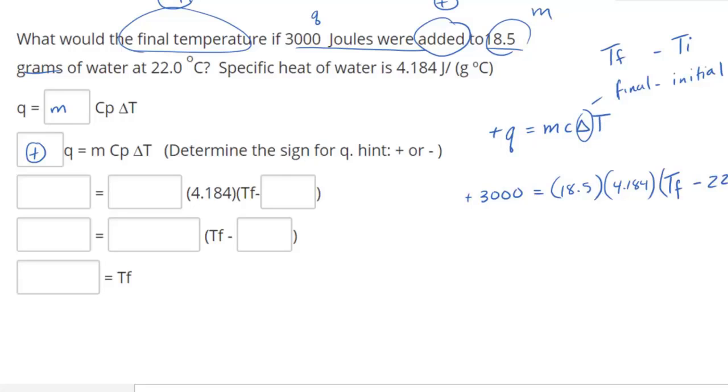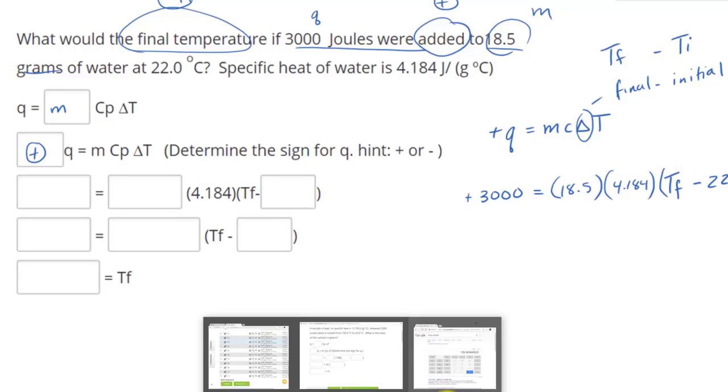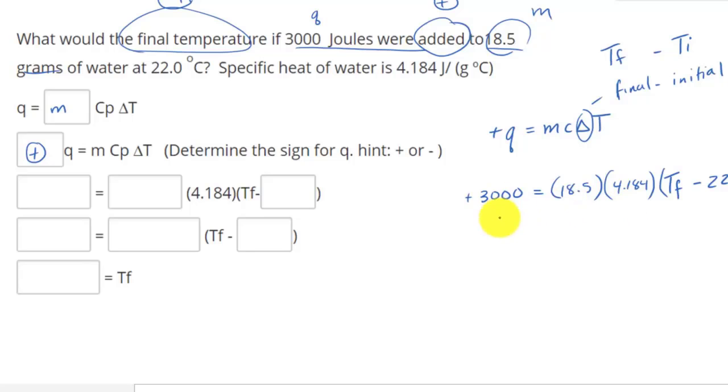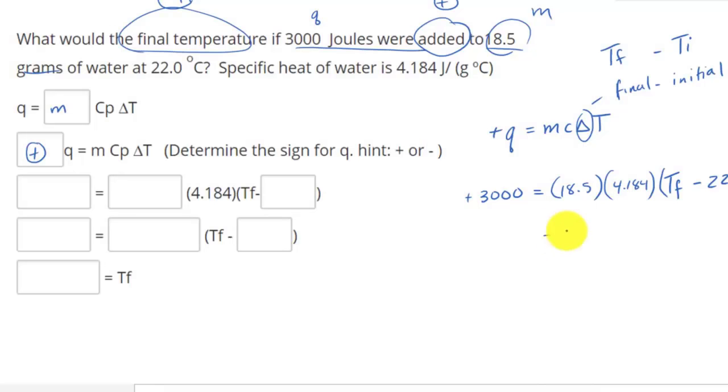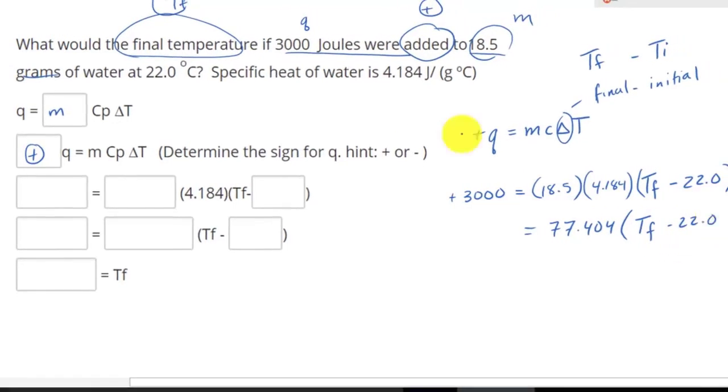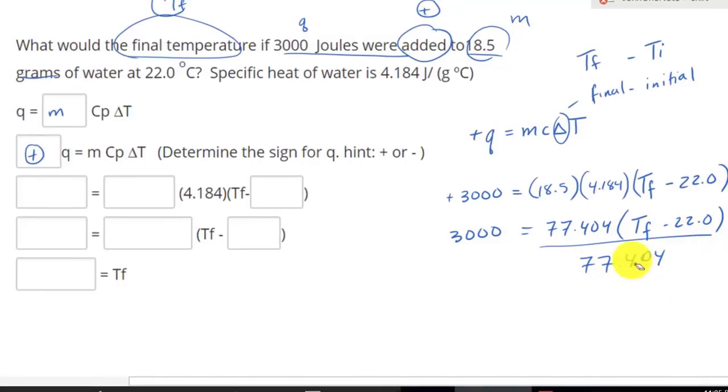Now, can we simplify this using our Google calculator? Let's plug this in. Well, I can simplify this side. And notice how I use parentheses again. And this gives us 77.404. So we have 77.404 times Tf minus 22.0.